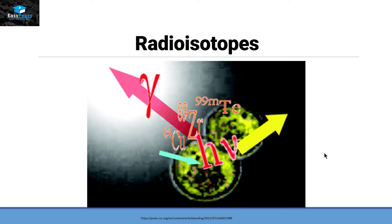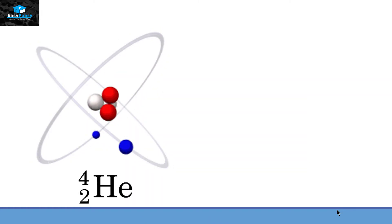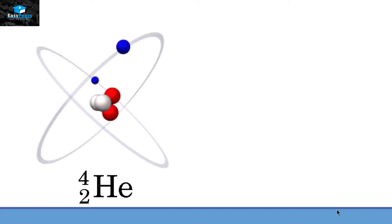These radiations are the result of the decaying of the nucleus present in that element. Radioisotopes will be discussed in detail in a separate video. Now, back to the Helium atom — we are done with the nucleus, so let's talk about the electrons present in it.